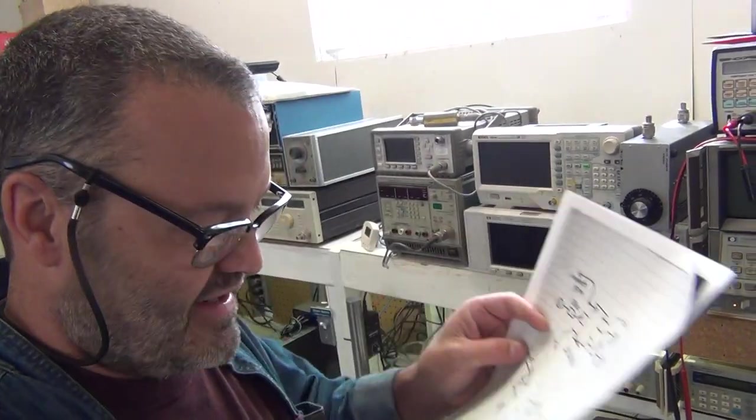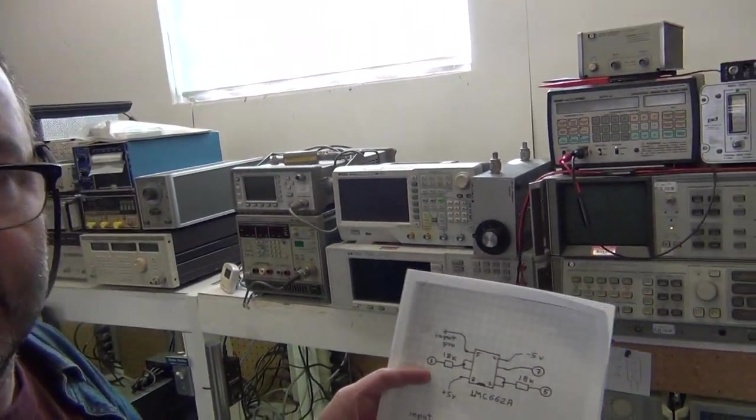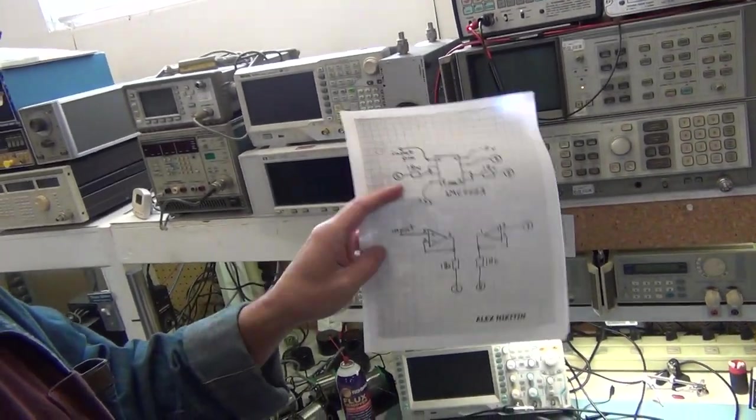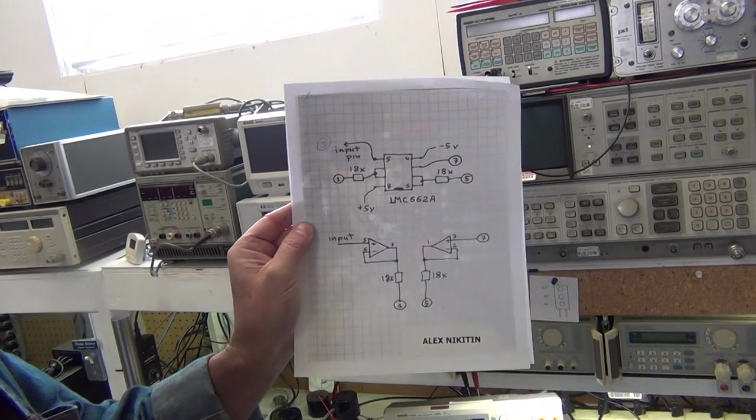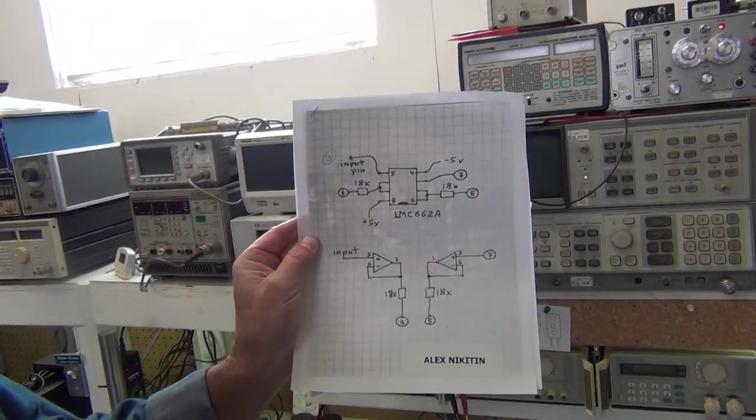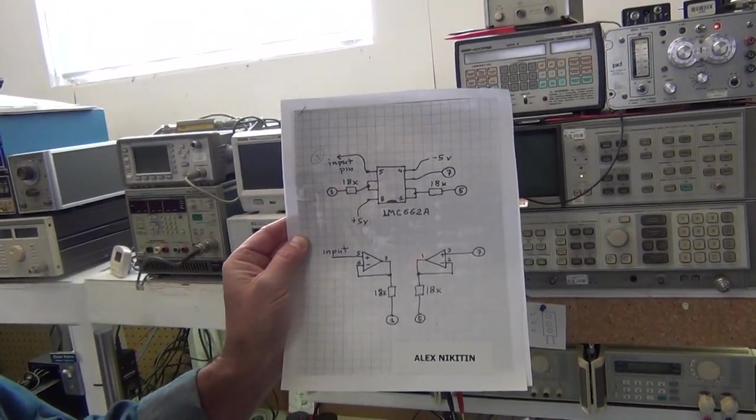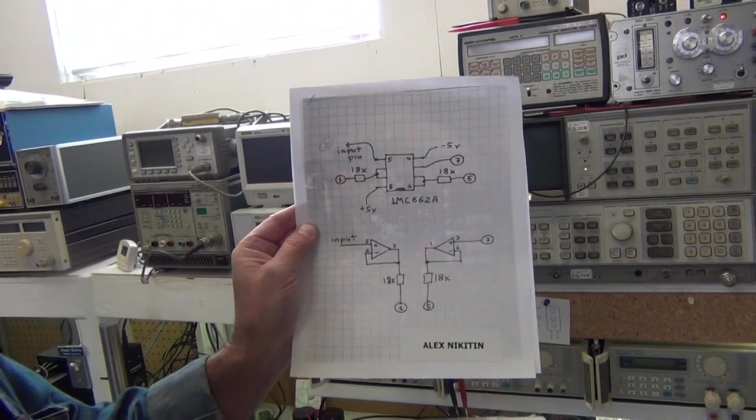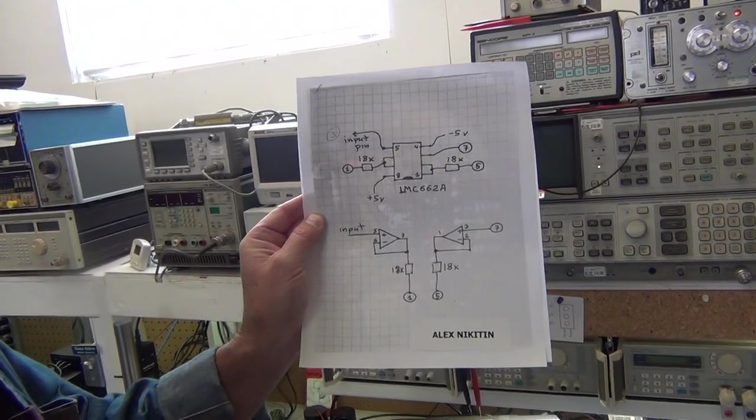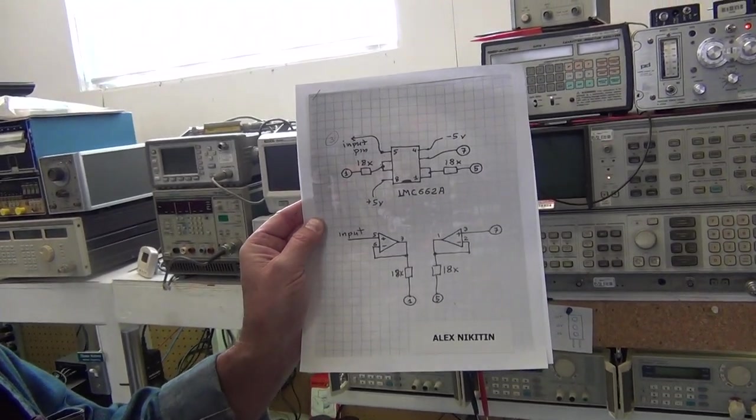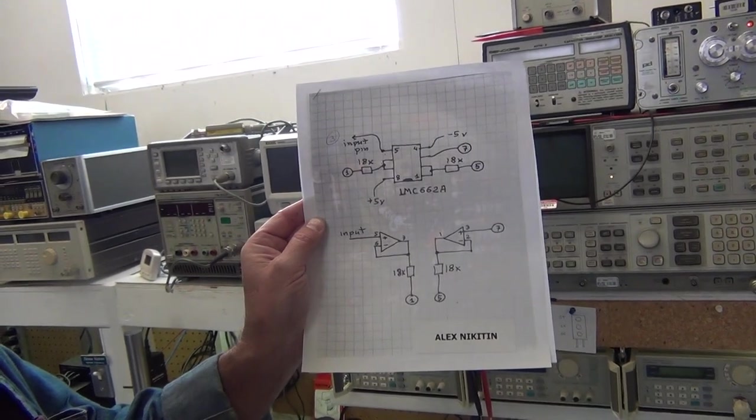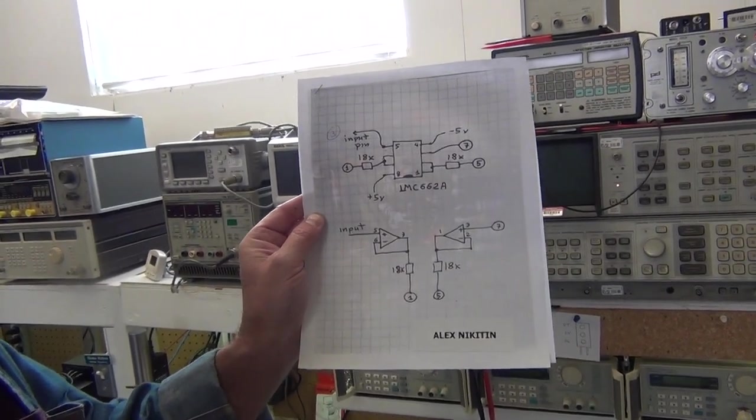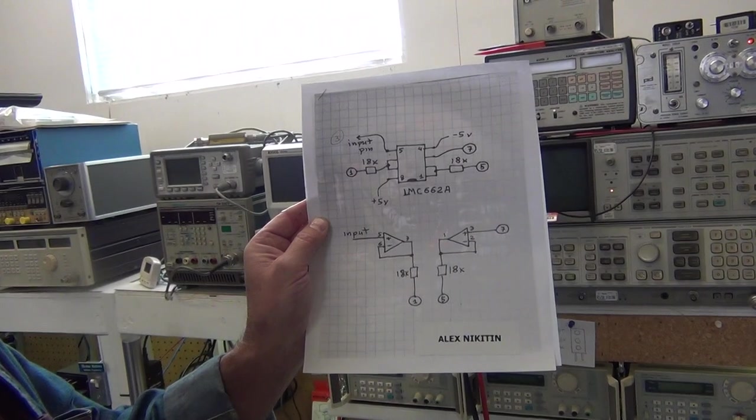But a fellow on the internet, on EEV blog, Alex Nitiken, posted this circuit that uses a National Semiconductor LMC662AIM, which is a three femtoamp op amp. And he replaces that dual JFET with an op amp circuit that mimics the JFET.